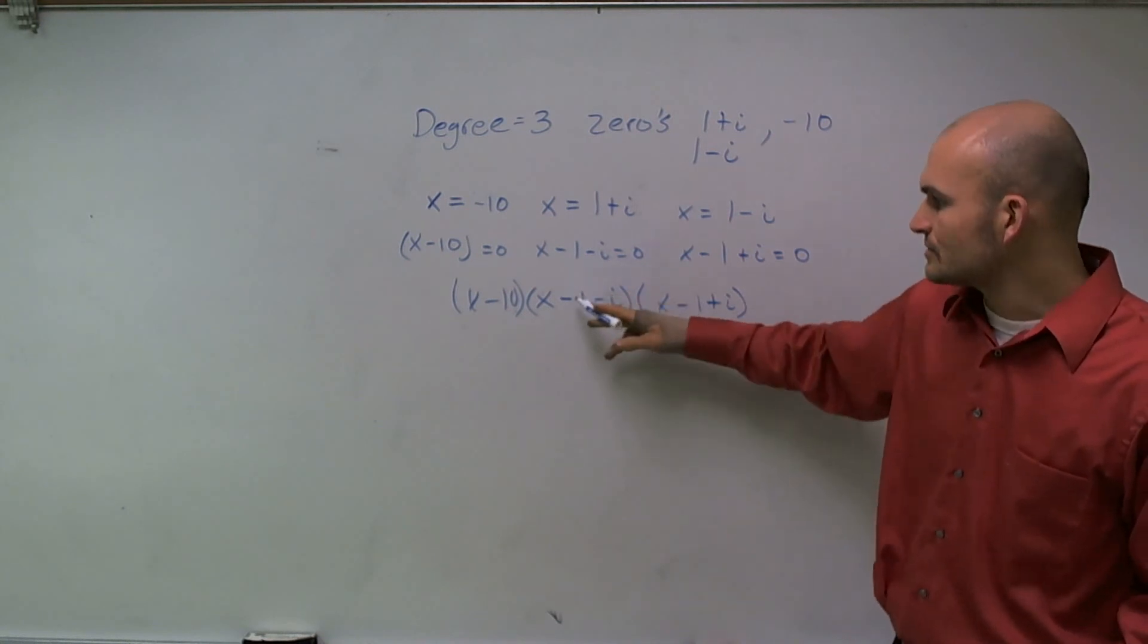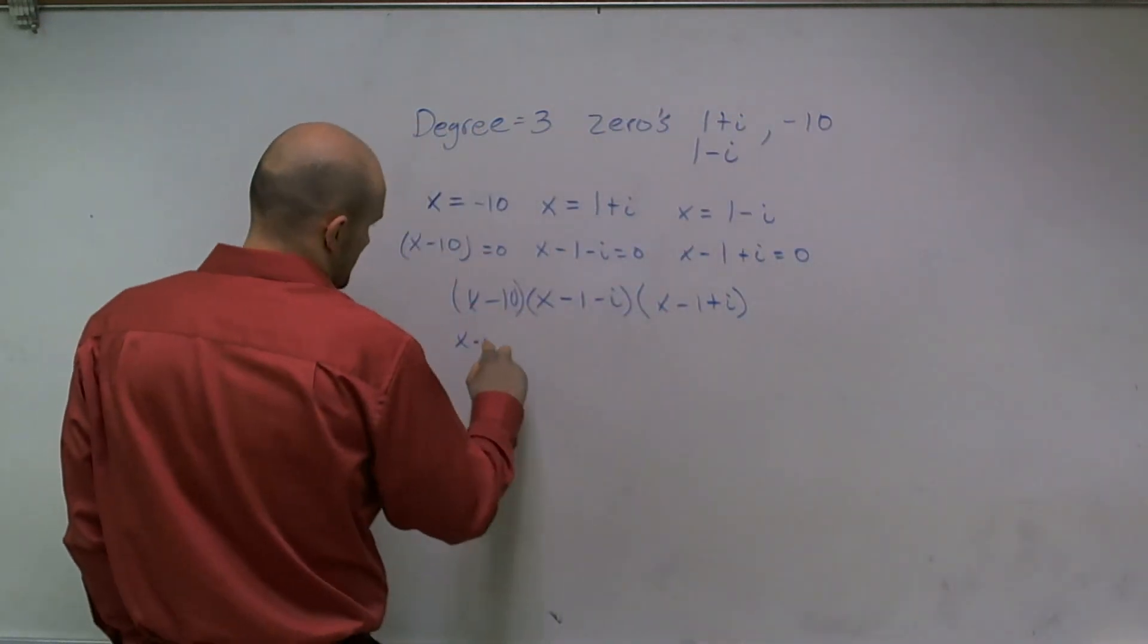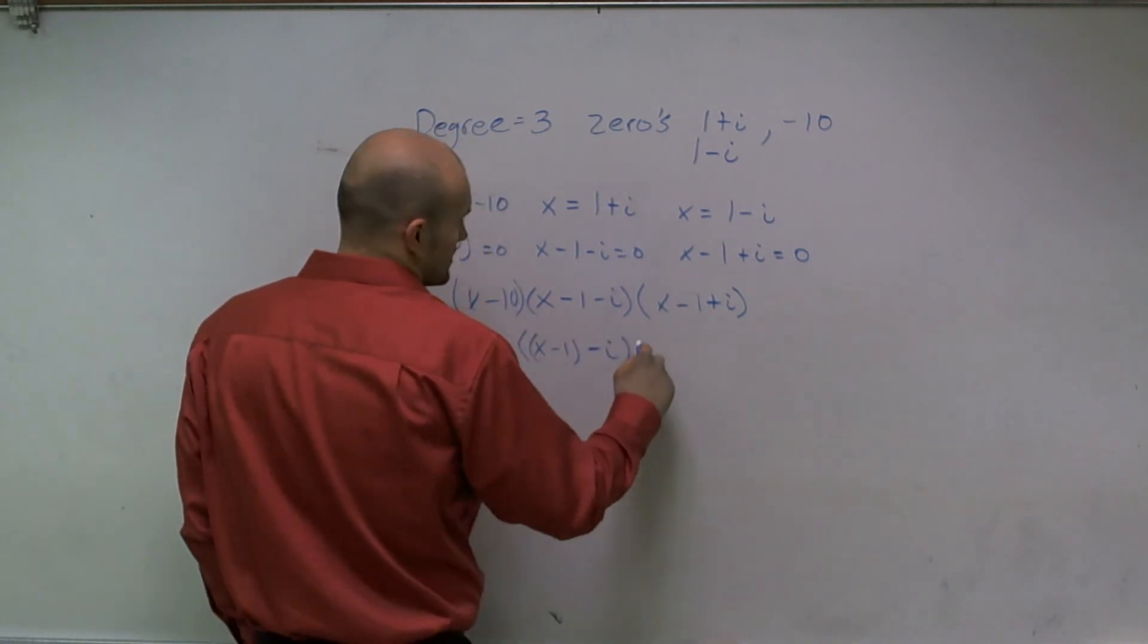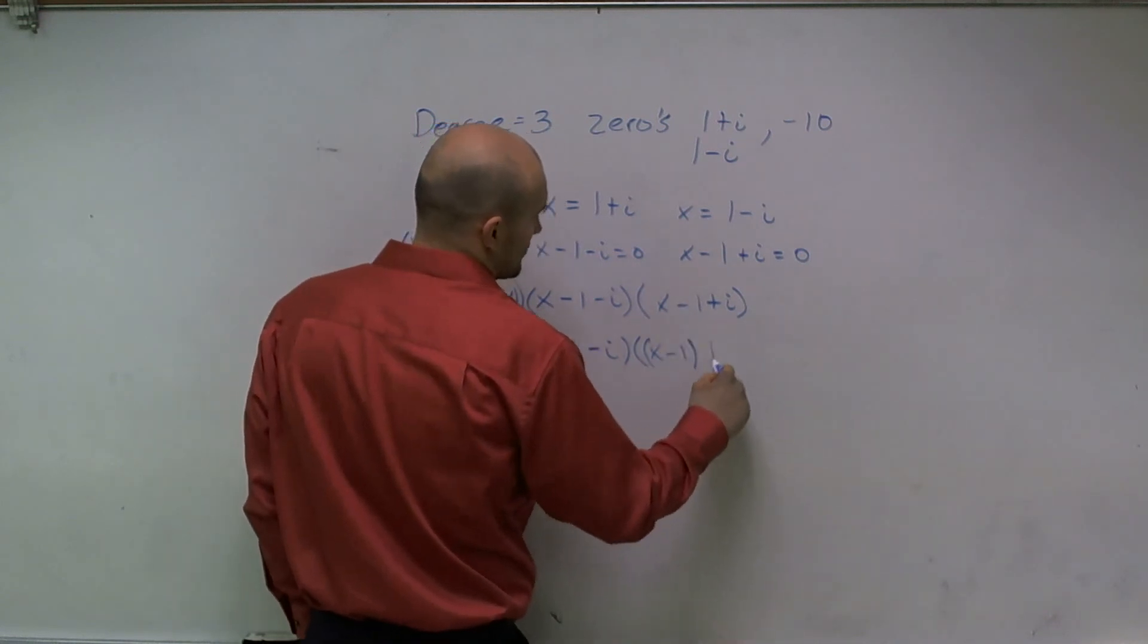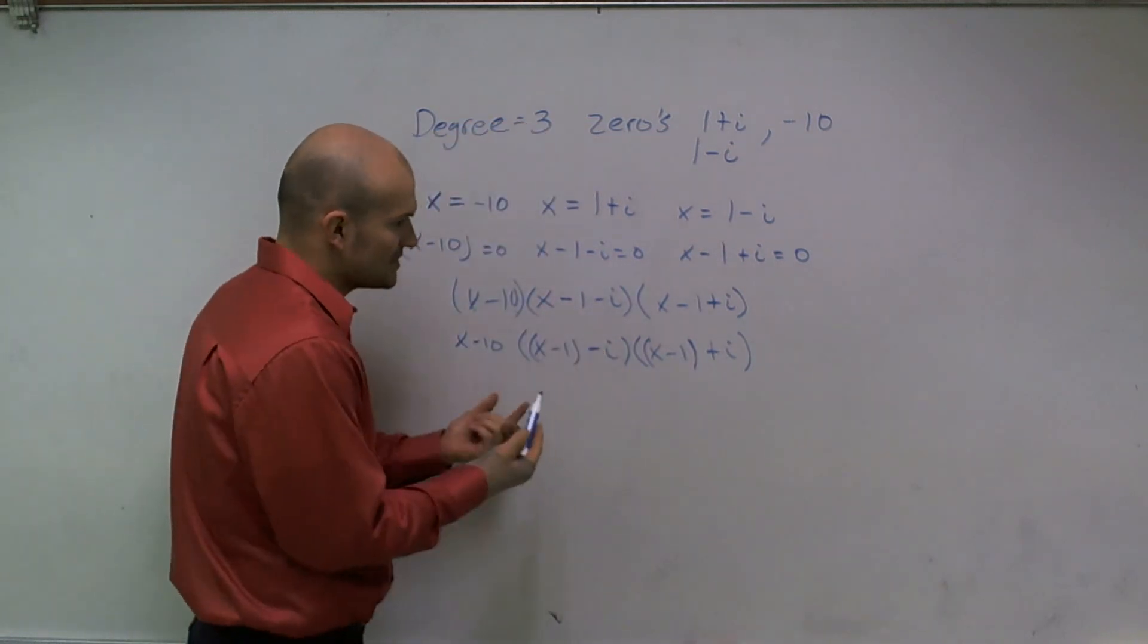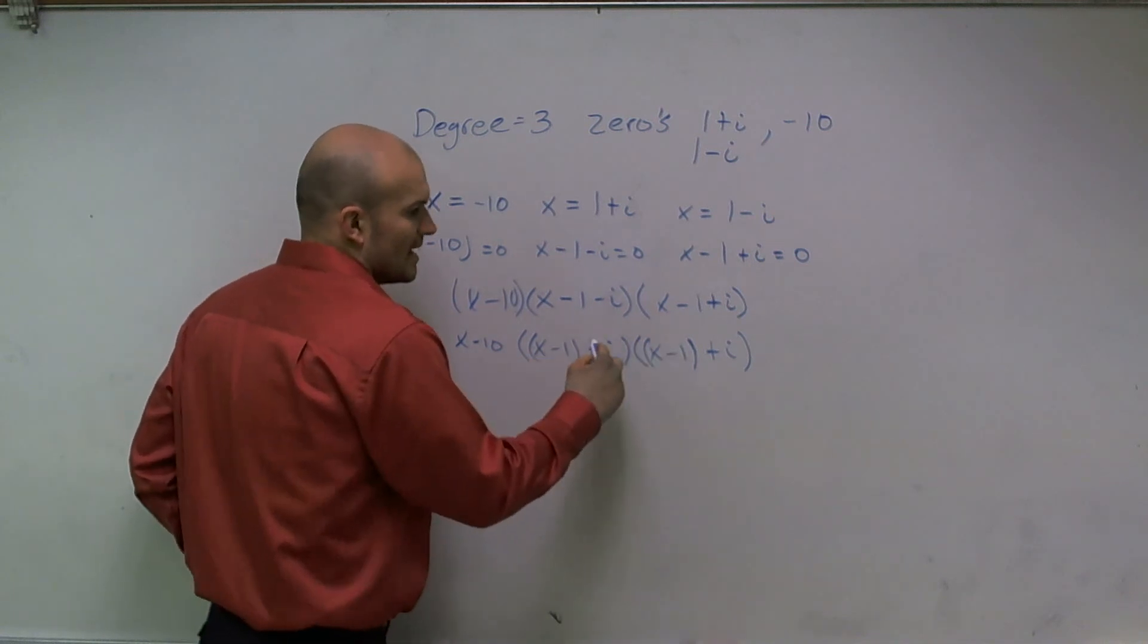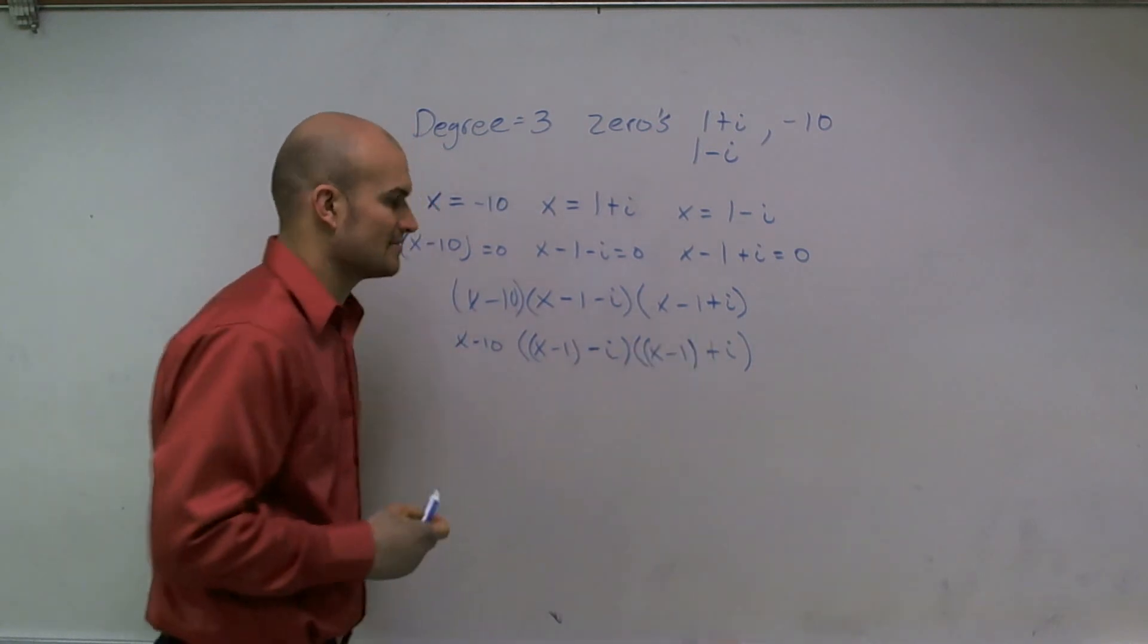What I'm going to do is I'm going to put parentheses around this x minus 1. Now, since they're the same, I'm going to say x minus 1 minus i times x minus 1 plus i. And what I notice when that happens is I actually have a difference of two squares. So these two terms are going to be the same, and these two terms are the same, and I have a difference of my operations, a negative and a positive.